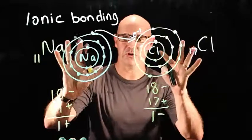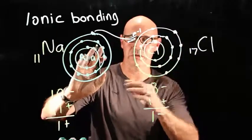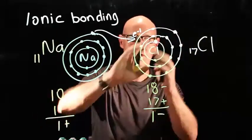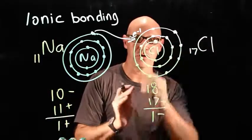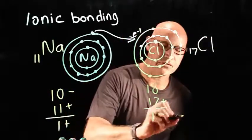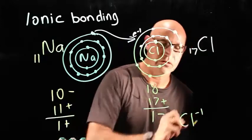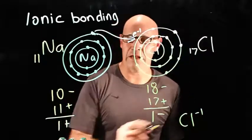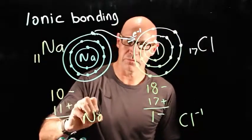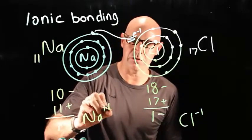So, sodium now has a full outer shell, it's satisfied. Chlorine has a full outer shell, it's satisfied. Chlorine is now negative, so it's a negative ion or an anion. Sodium is a positive ion.